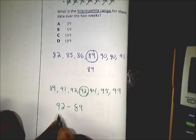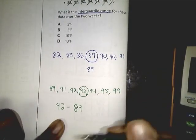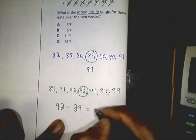And when you subtract 92 minus 89, it's just going to give you that your answer is three.